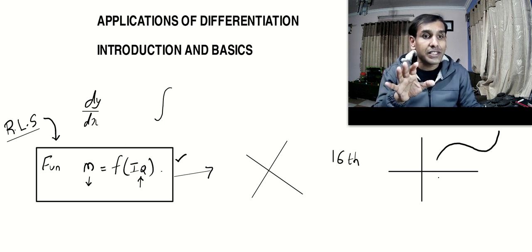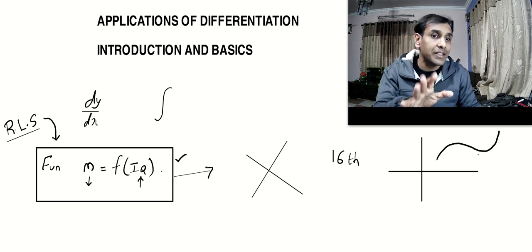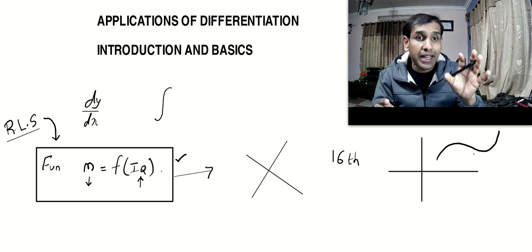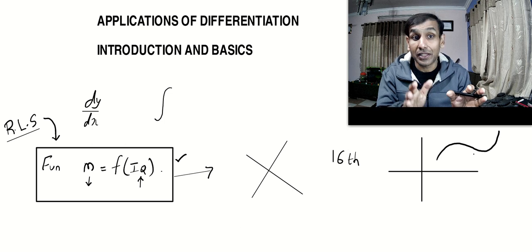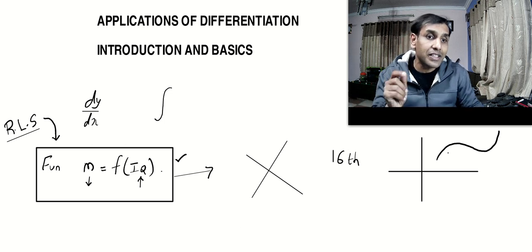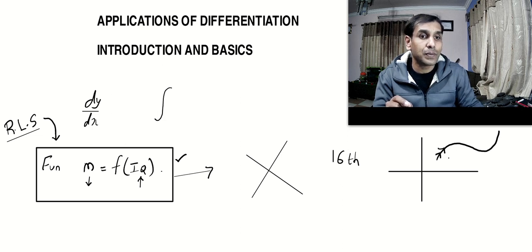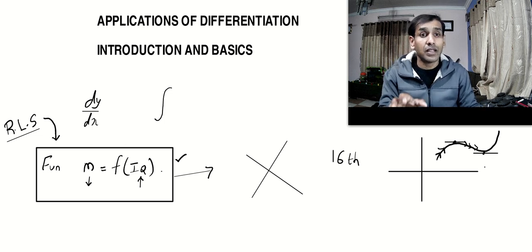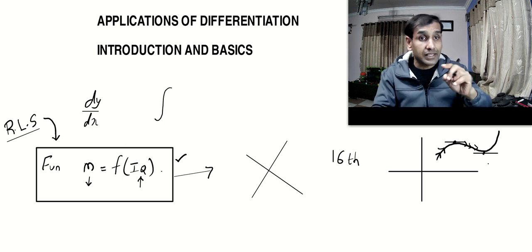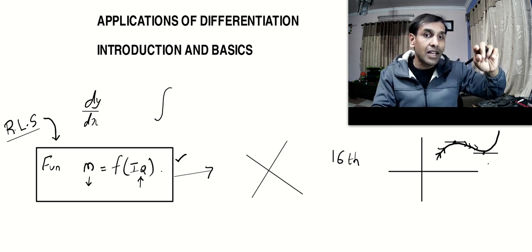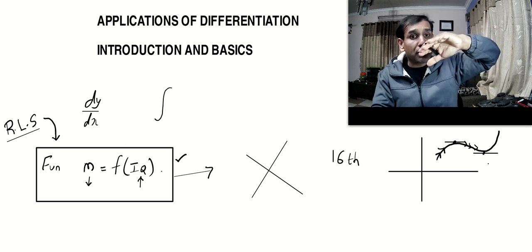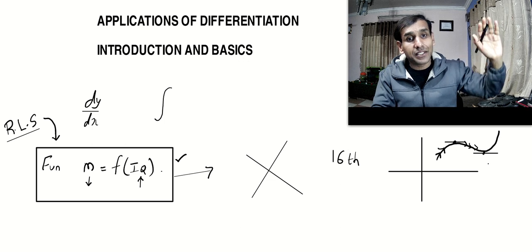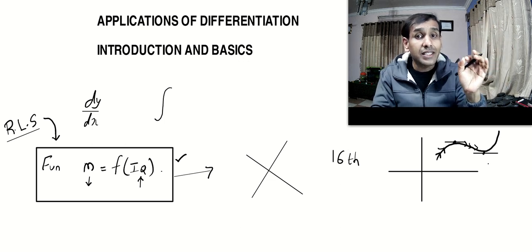To help you understand, let's imagine the graph of the function. When we do a basic analysis, we are interested in a few things that you have already learned in class 11 and class 12: is the graph increasing? Is the graph decreasing? Have we reached a maximum point? Did we reach a minimum point? Is the graph bending downwards or upwards? The answer to all these questions can be found using our derivative.